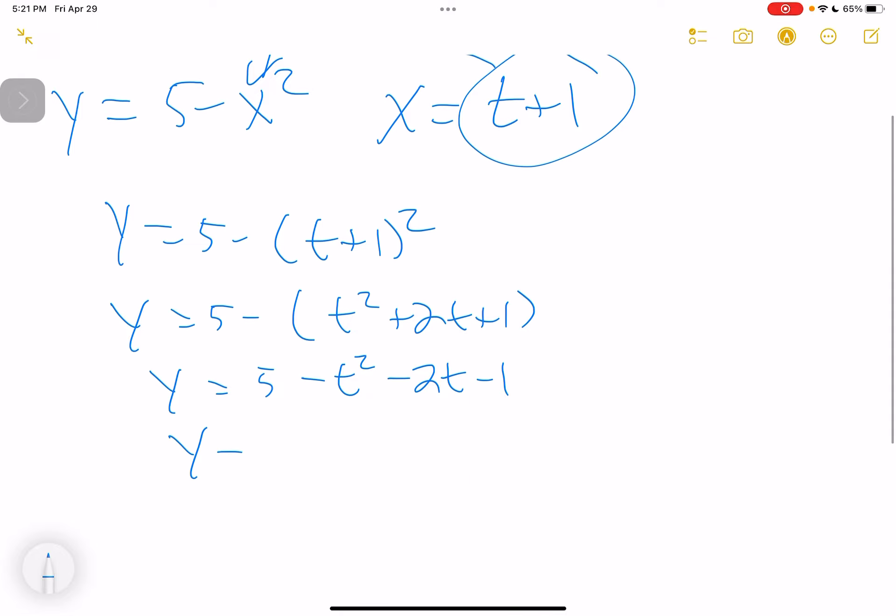So y equals negative t squared minus 2t plus 4, if I put it in descending order. And the x we already have as being just t plus 1. And that is it.